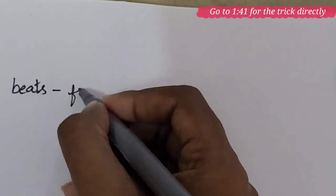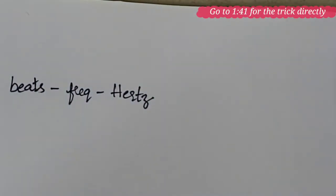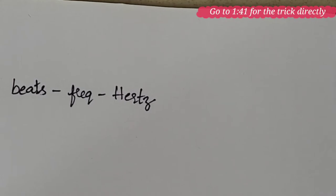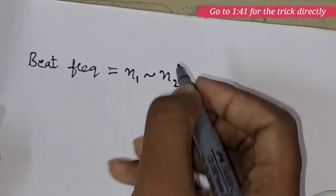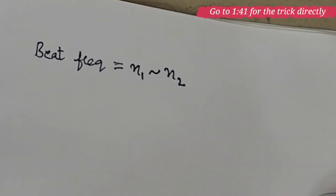Beats are usually measured in terms of frequency. So, here is one and only one basic formula that you will be using in beats. Beat frequency equal to N1 difference N2. Here, N1 is frequency of first wave and N2 is frequency of the second wave.